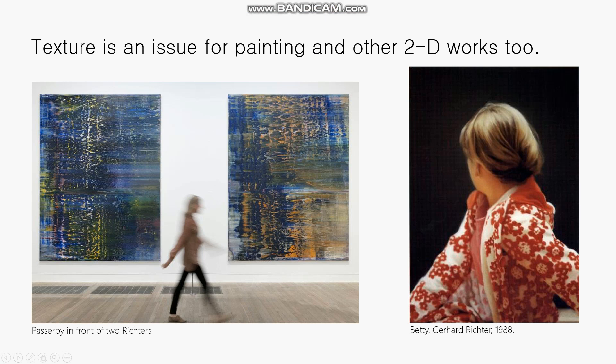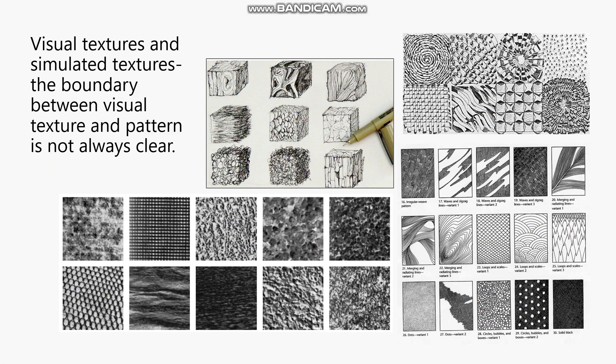Sometimes paintings can have almost no surface texture. This painting by Richter is extremely flat, like a smooth glass-like surface. Any sense of texture is really an illusion — texture of the content inside the painting, not of the painting itself. This leads to another topic: visual textures and simulated textures.